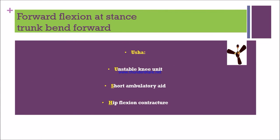Next is forward flexion at stance. During the stance phase, the trunk bends forward. To remember the causes, use the mnemonic 'USH': U is unstable knee unit, S is short ambulatory aid, and H is hip flexion contracture.